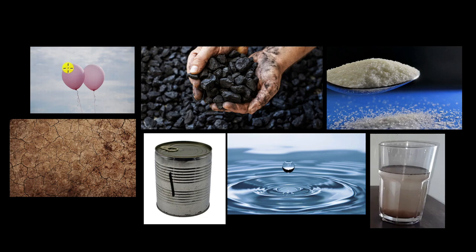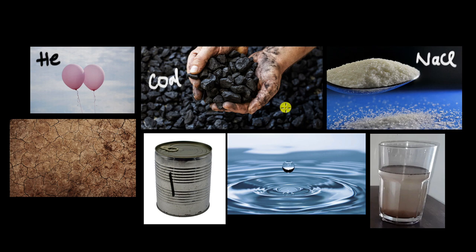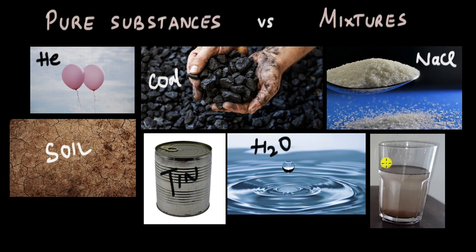We have a bunch of substances here. We have helium gas in these balloons, this is coal, this right here is salt or NaCl — sodium chloride, this over here is soil, this is a box of pure tin, this right here is water H₂O, and this is sand mixed with water. Think about which of these substances can be called a pure substance and which can be called a mixture.